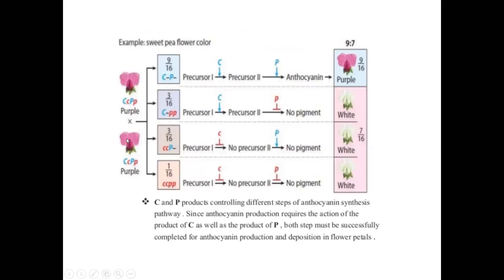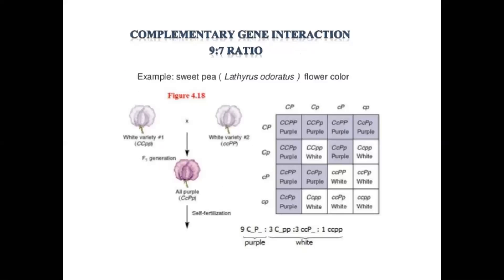Coming to complementary gene action: the ratio here is 9:7. This experiment is done using sweet pea — specifically the flower color of Lathyrus odoratus. The white variety of sweet pea flowers is used, and when two white varieties with different genotypes are crossed, we get purple color. In the offspring, 9 purple flowers and 7 white flowers are produced — the 7 whites being from the 3+3+1 groupings, giving a 9:7 ratio.